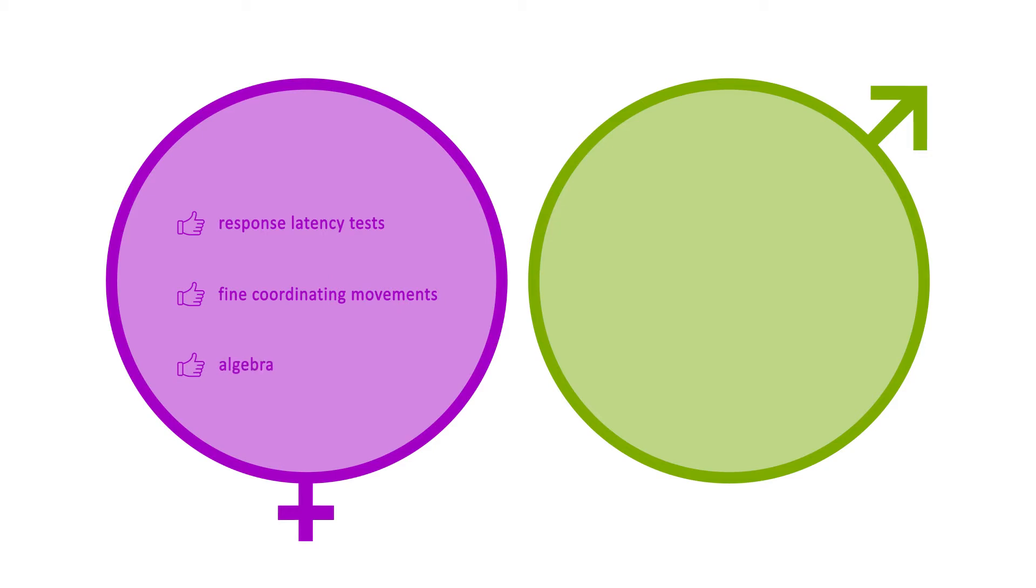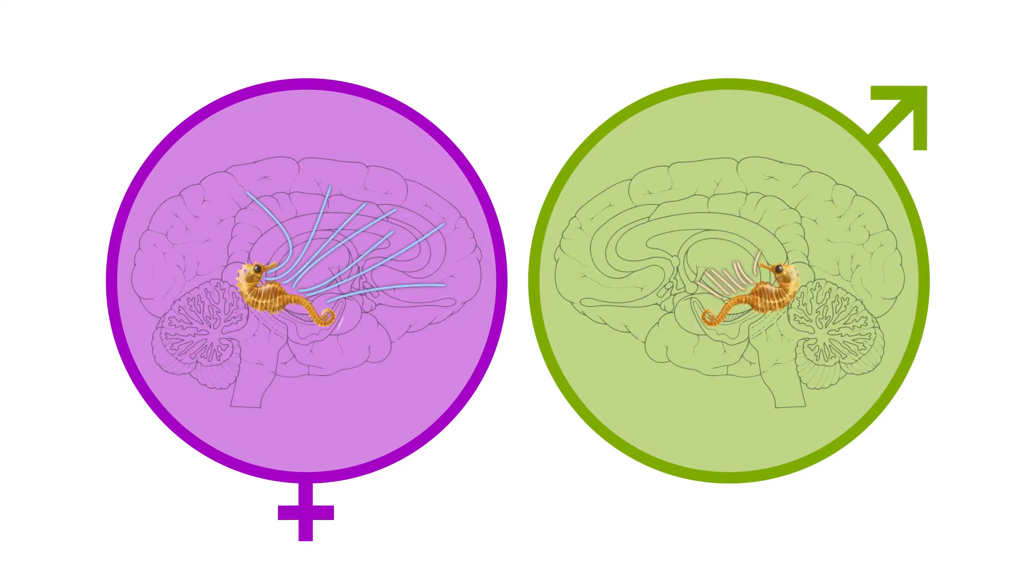Men on average are better in goal-directed abilities in geometry and 3D movement in space. Acute stress increases synapses in male animals but decreases synapses in female animals in the hippocampus, the brain region involved in memory.